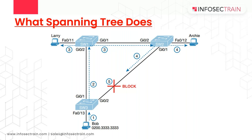Interfaces in the forwarding state act as normal, forwarding and receiving frames. Interfaces in the blocking state do not process any frames except STP/RSTP messages. Blocked interfaces do not forward user frames, do not learn MAC addresses of received frames, and do not process received user frames.